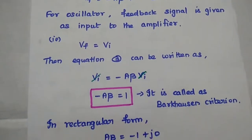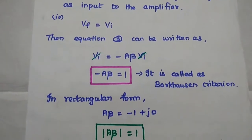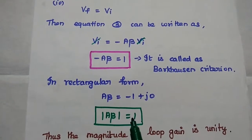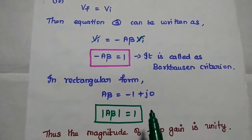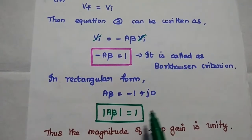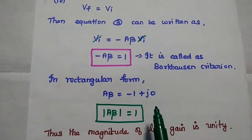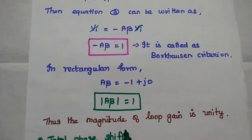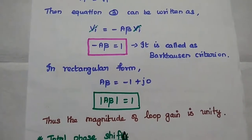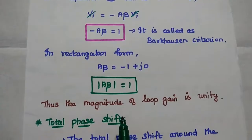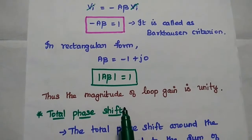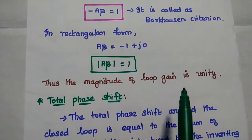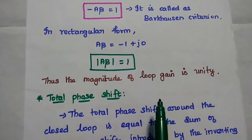This is called the Barkhausen criterion. In rectangular form, Aβ is equal to minus 1 plus j0 — the imaginary part is zero. If we take the magnitude of this loop gain, we get the modulus of Aβ equal to 1. Thus, the magnitude of loop gain is unity, and the first condition is obtained.